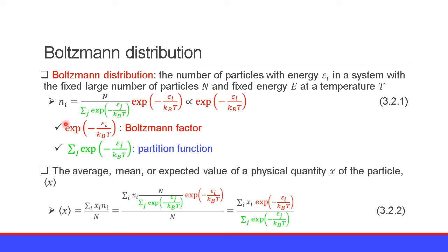Using the Boltzmann factor, the average or mean or expected value of a physical quantity x of the particle is given by this equation. Namely, the average of physical quantity x is equal to the sum of xi times the number of particles ni, divided by the total number of particles, which equals the sum of xi times its Boltzmann factor divided by the partition function, equation 3.2.2.